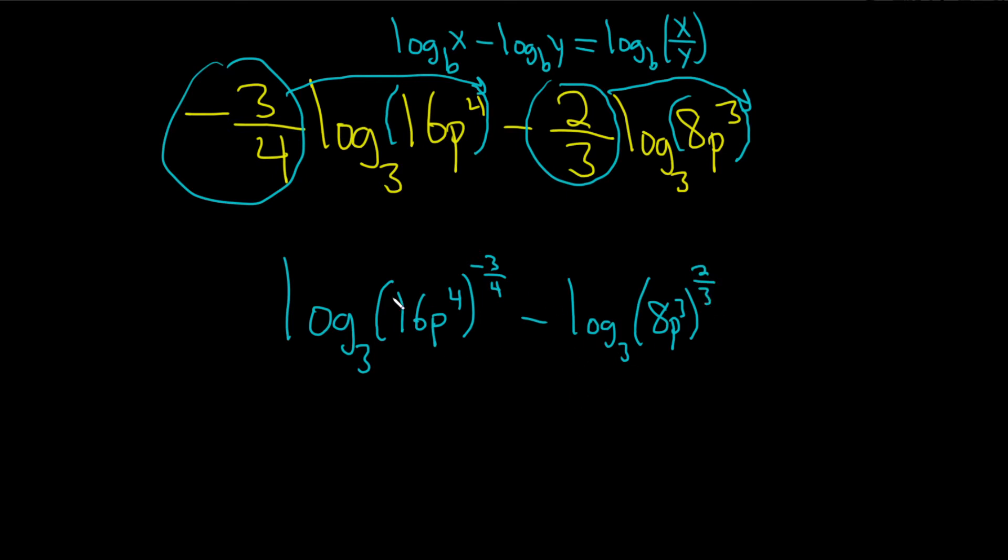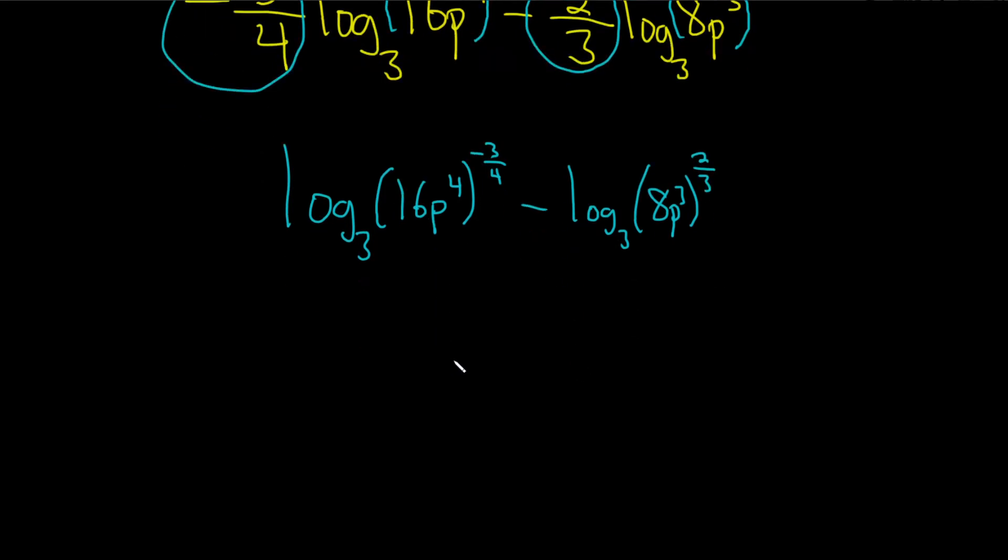Let's go ahead and simplify this. The simplification works here by raising each piece to the negative three-fourths, because if you have a times b to the n, the rule says you just get a to the n, b to the n.